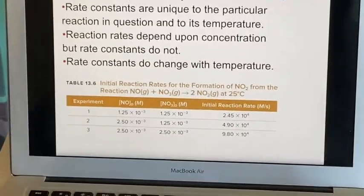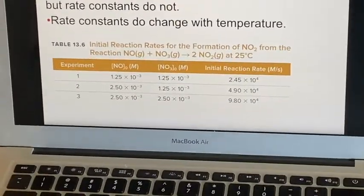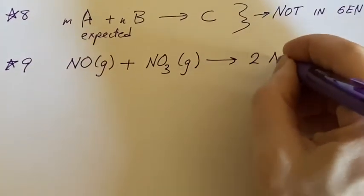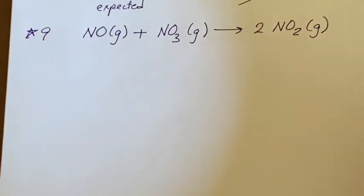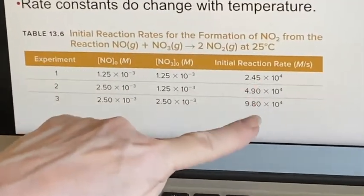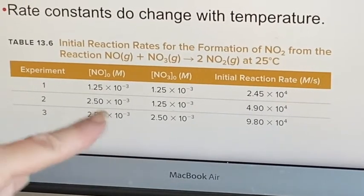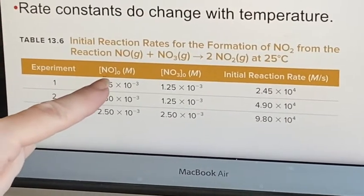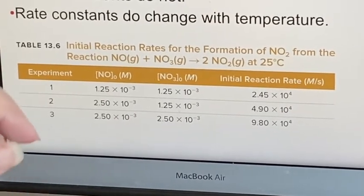On number nine, we'll write down what the reactants are: nitrogen monoxide and nitrogen trioxide combining to form two nitrogen dioxides. Somebody has gone to the effort of doing the experiment and writing down what the initial reaction rate is. They've done three separate experiments and changed the concentration of the two reactants in a very logical manner.